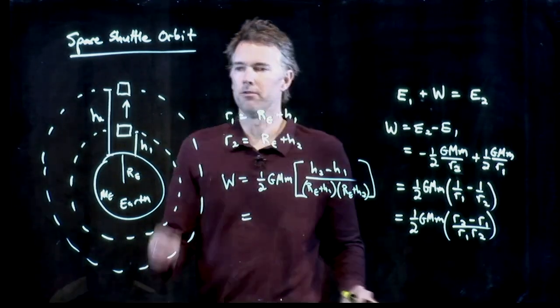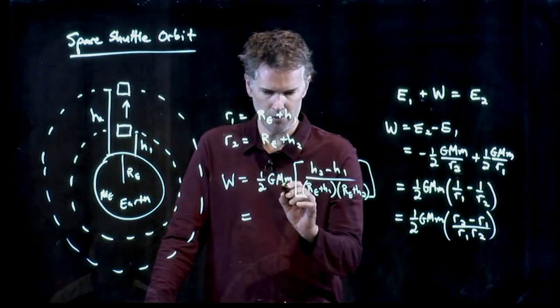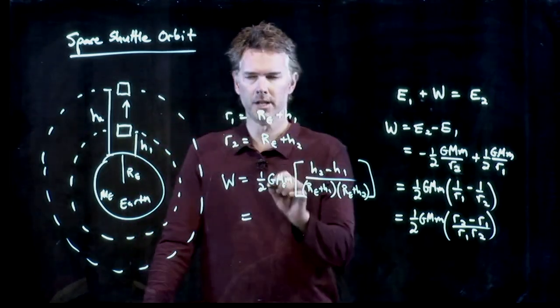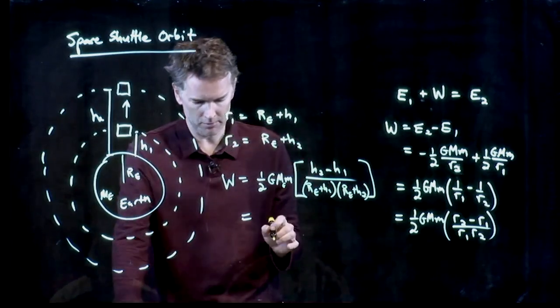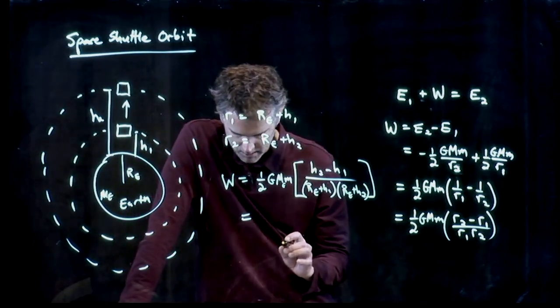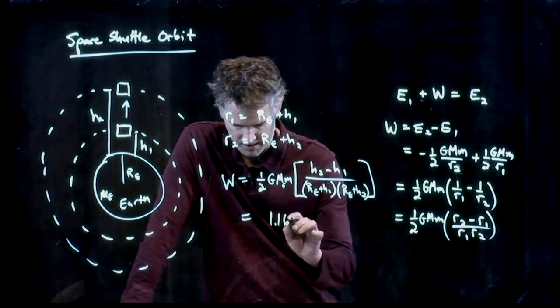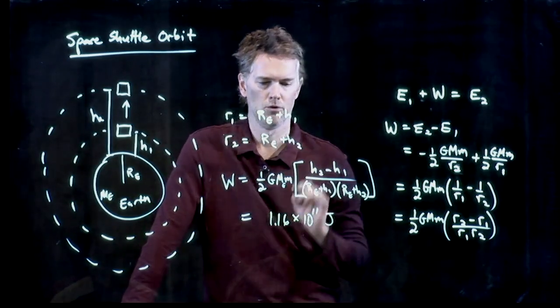And now it's just plugging in a bunch of numbers. And we have all these numbers. This is of course the mass of the Earth. That little m is the mass of the shuttle. G is a universal gravitational constant. If you plug in all those numbers, you can double check with me, but you should get 1.16 times 10 to the 11 joules.